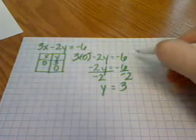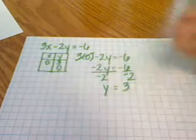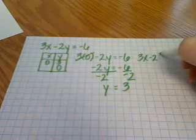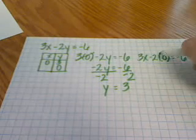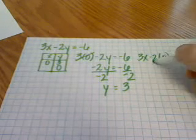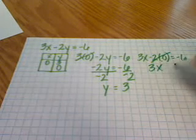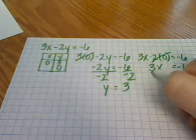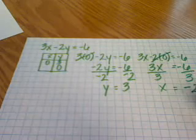Next I'm going to find the x value when y is 0. So my equation becomes 3x minus 2 times 0 equals negative 6. 2 times 0 is 0, so I'll cancel that out and bring down 3x equals negative 6. To get x by itself, I'll use inverse operations. Dividing both sides by 3 gives me x equals negative 2.